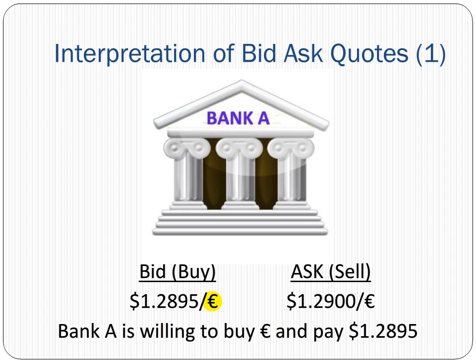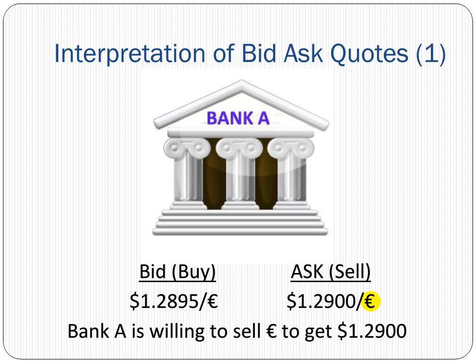The bid rate is the price at which the bank is willing to buy the base currency, or the currency in the denominator. In this example, Bank A is willing to buy euros and pay $1.2895. The ask is the price at which the bank is willing to sell the base currency. In this example, Bank A is willing to sell a euro for $1.2900.